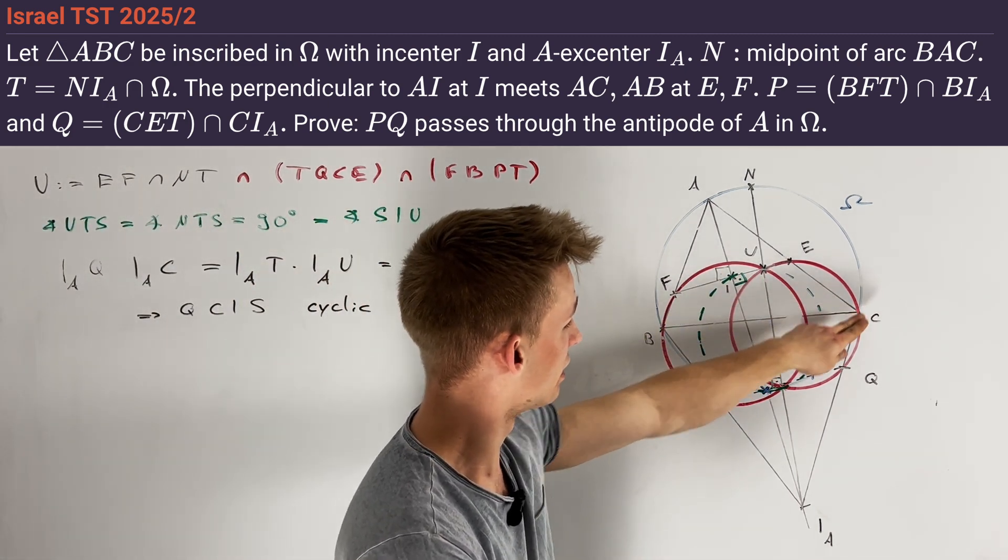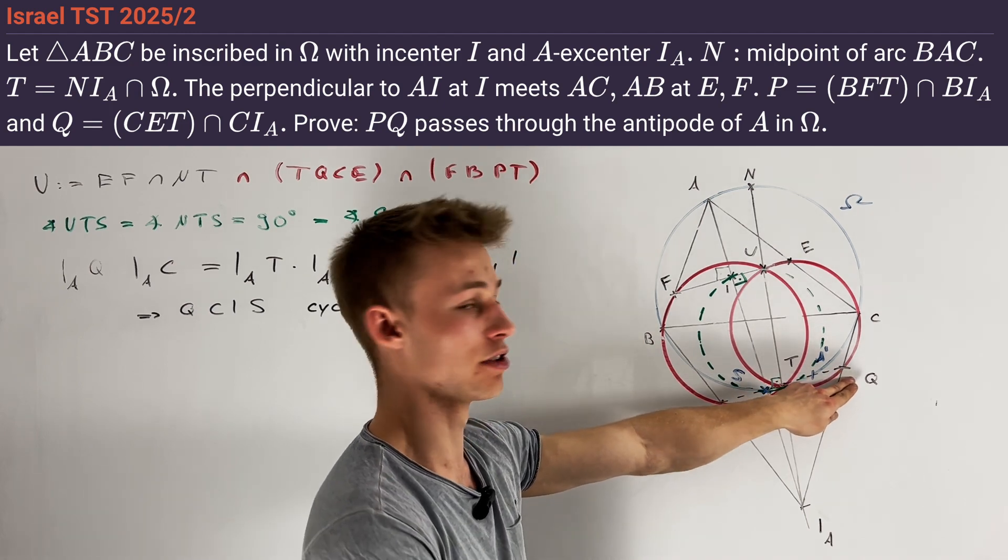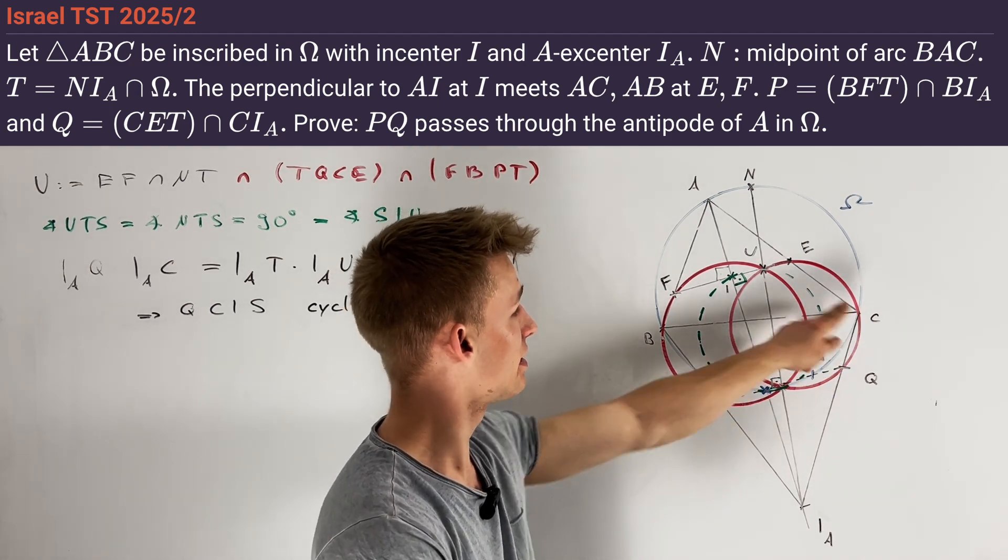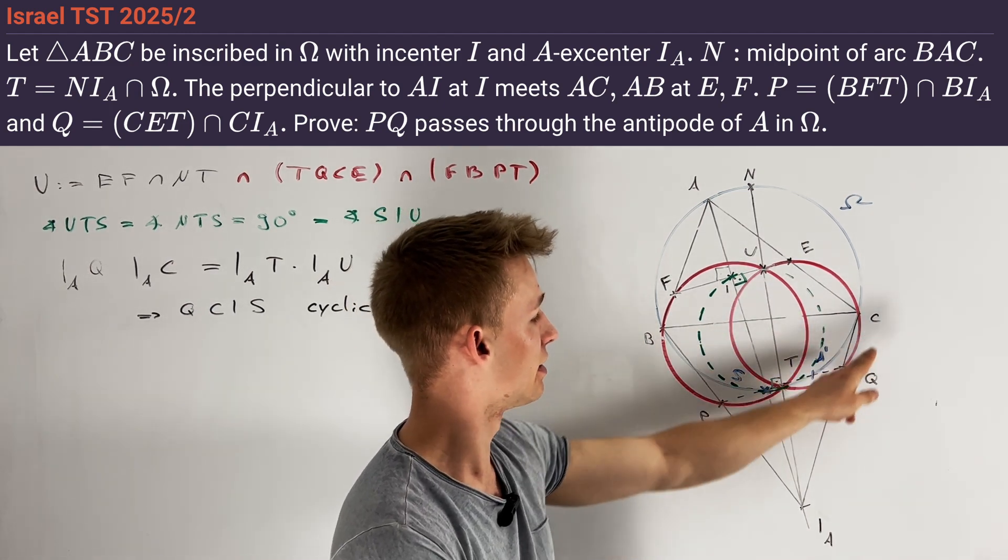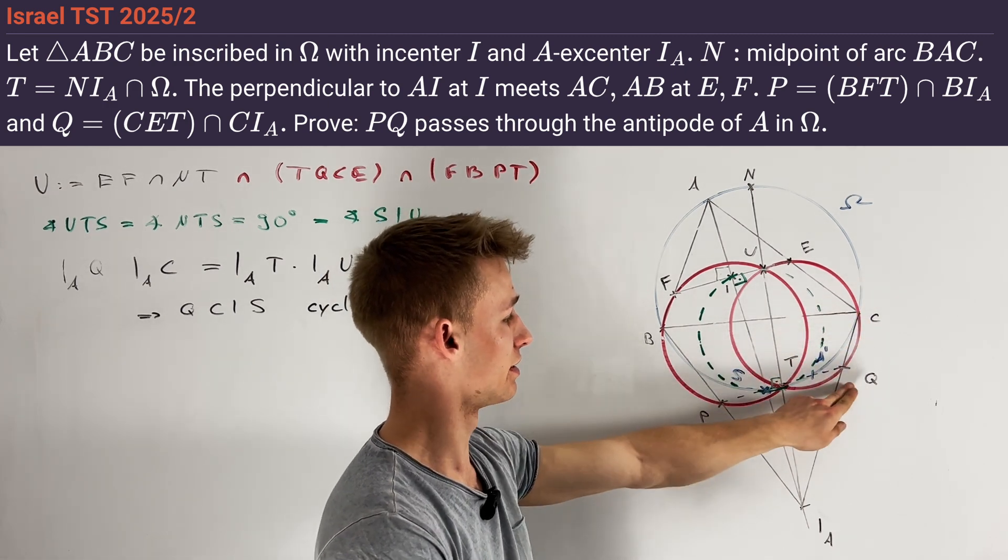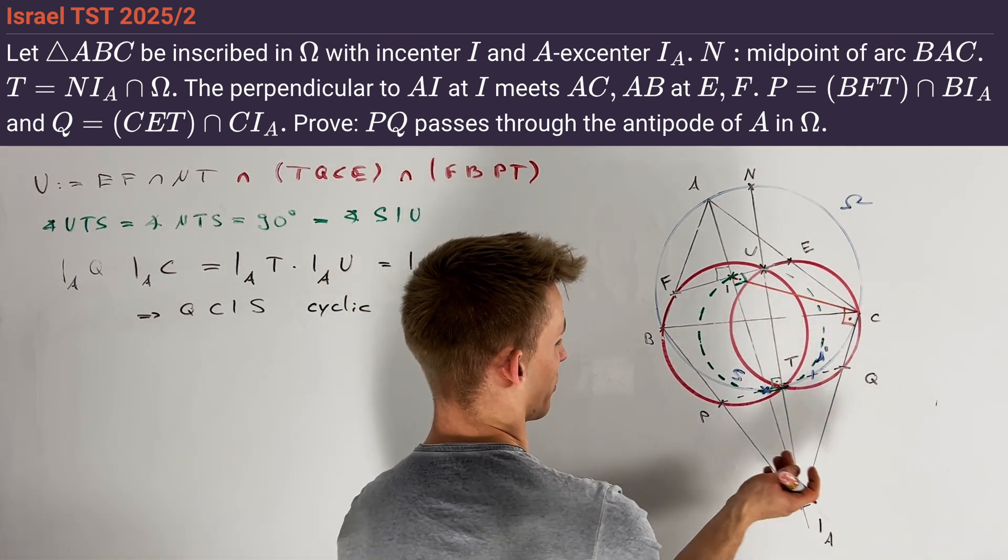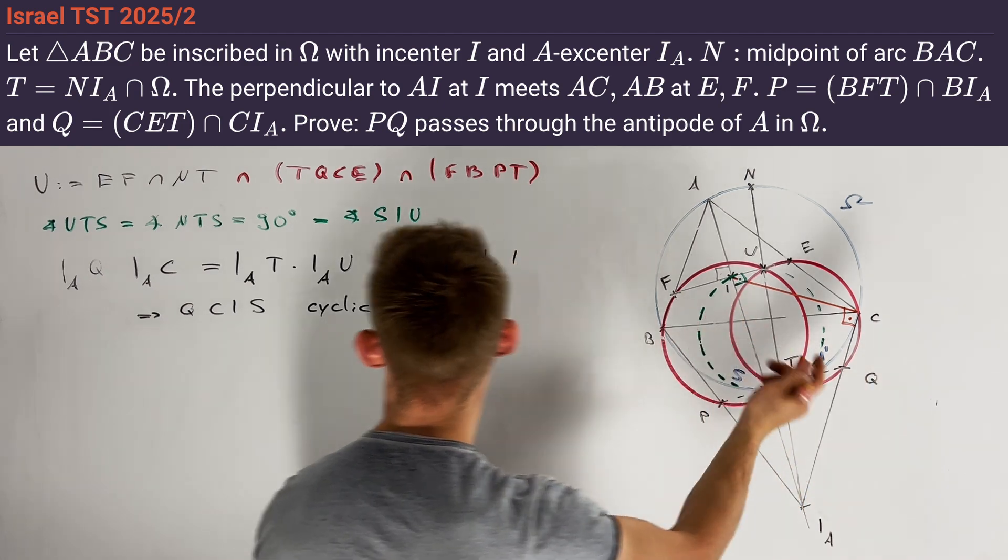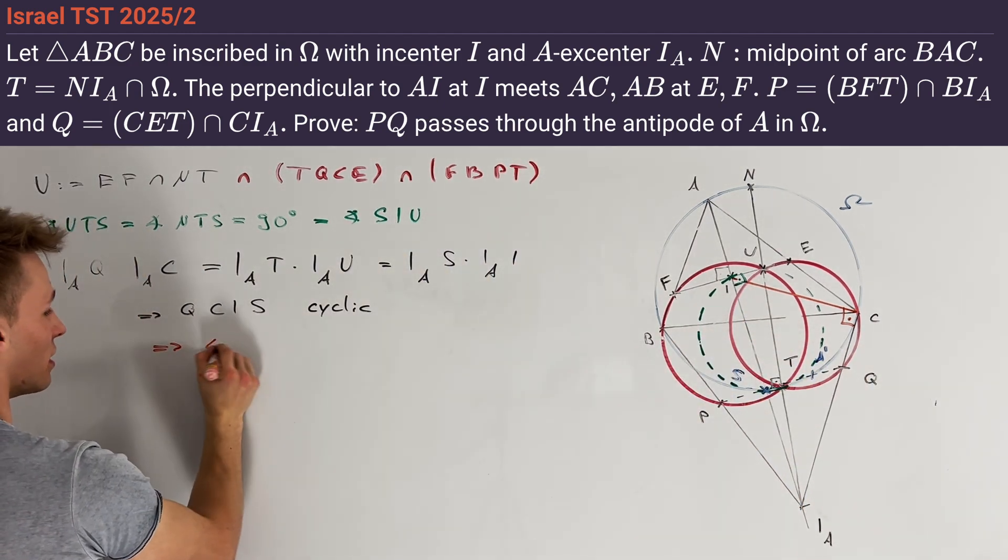We already know one angle in this cyclic quadrilateral. Namely, the angle ICQ is equal to 90 degrees, since CI is the interior and CQ the exterior angle bisector of the angle at vertex C. This immediately gives us that also the angle QSI must be equal to 90 degrees.